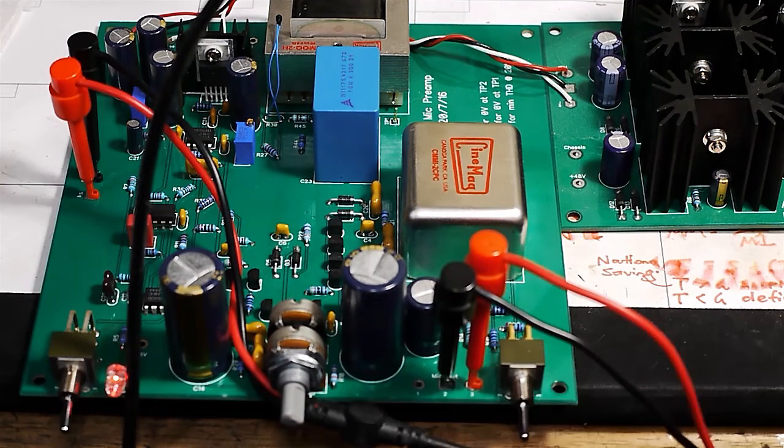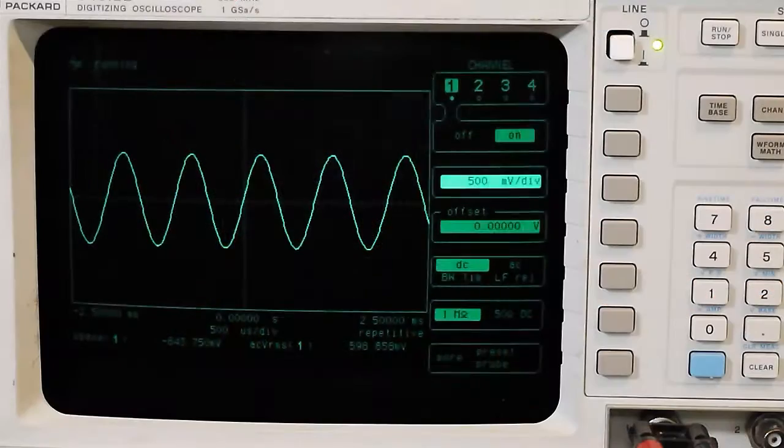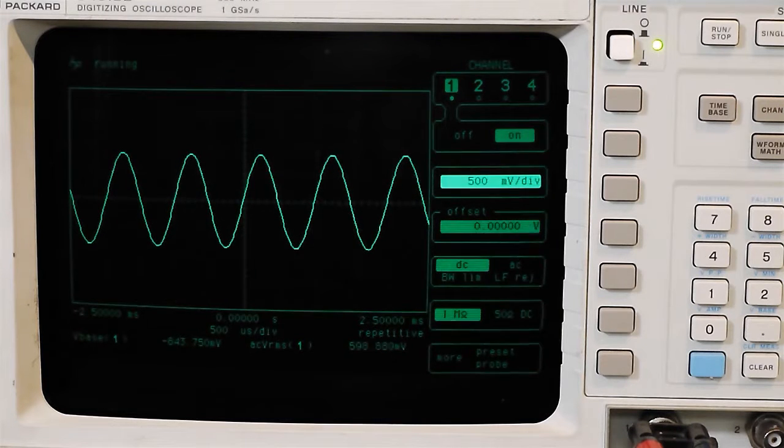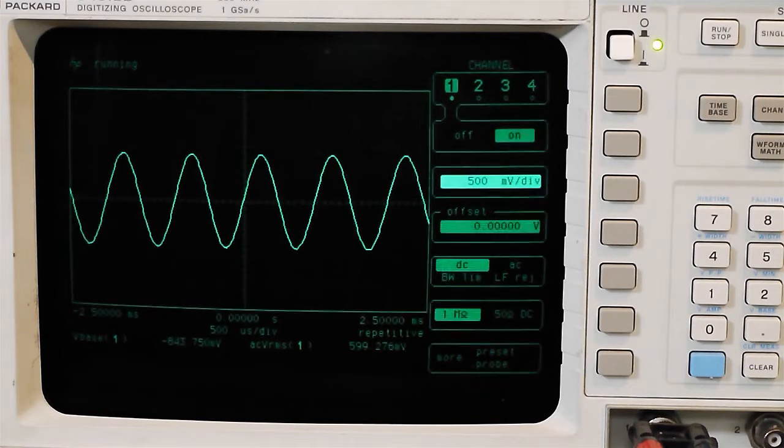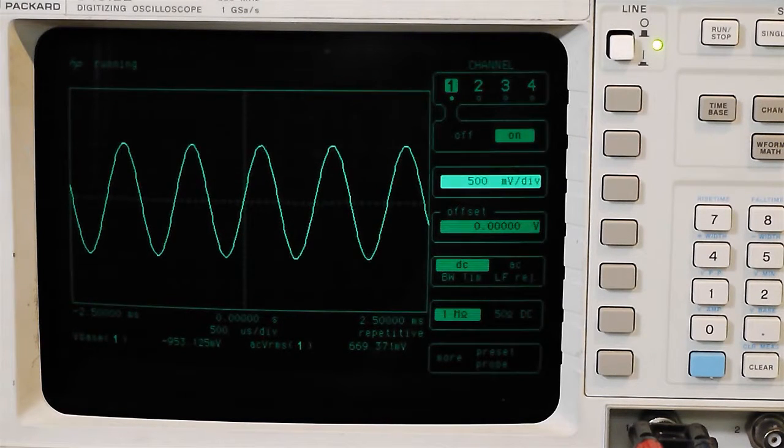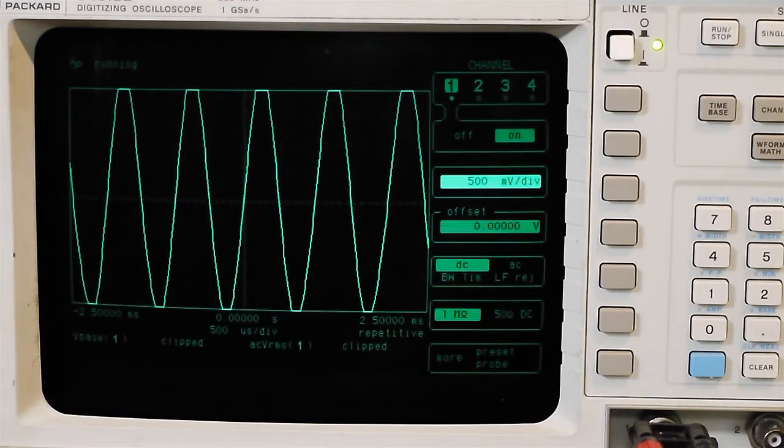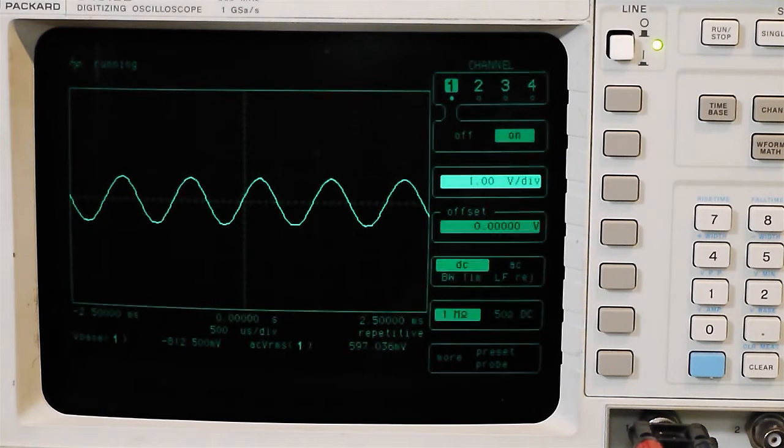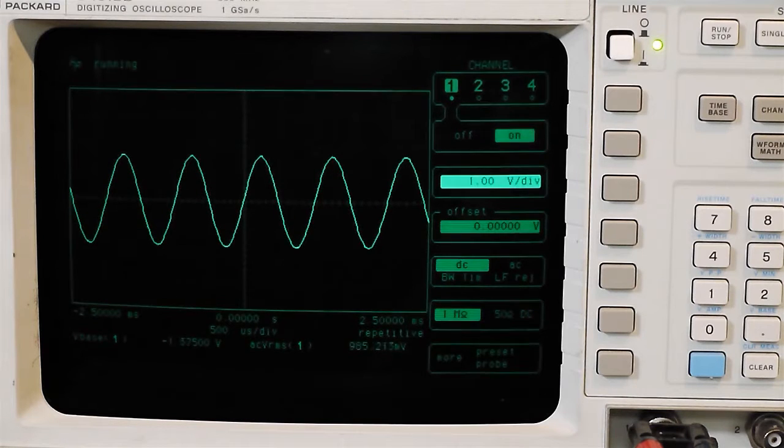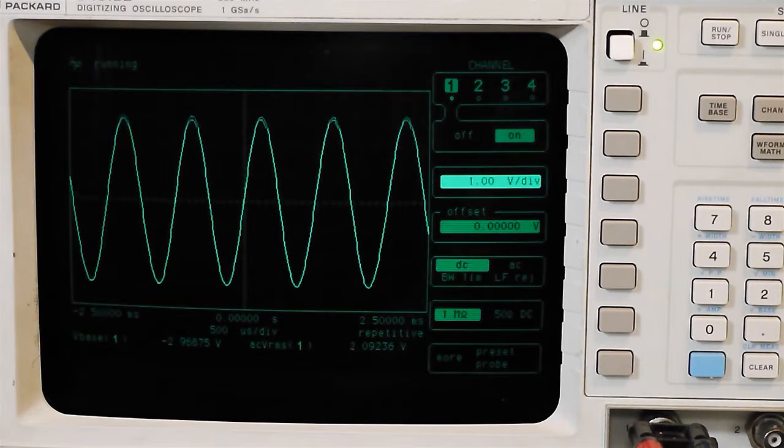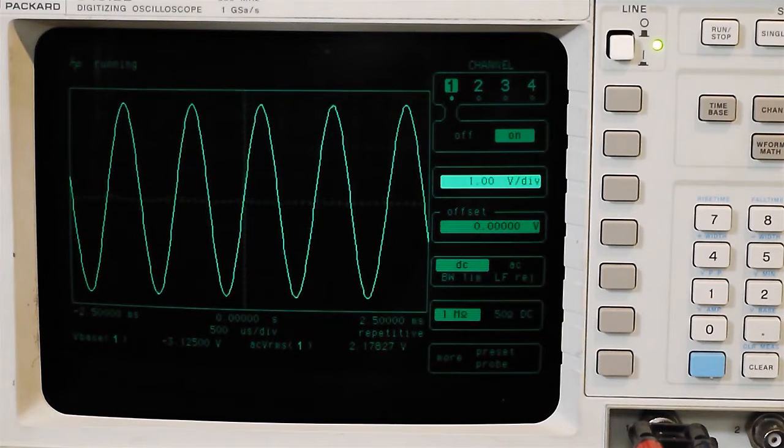That's what we're seeing at the output. We're applying a signal to the input at around about one volt RMS and we're getting out around about 600 millivolts RMS. That's with the pad engaged and the gain set to minimum, so somewhere under unity gain. Let's just try tweaking up the gain to see whether... oh yeah, that's sort of working, isn't it. Very cool.